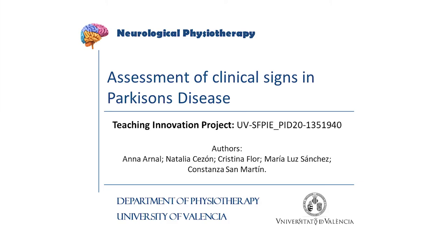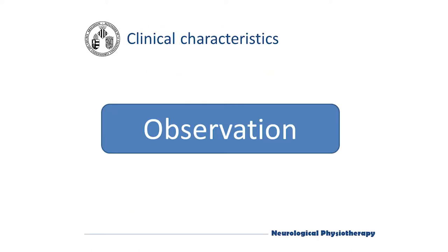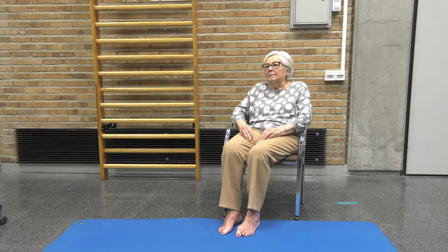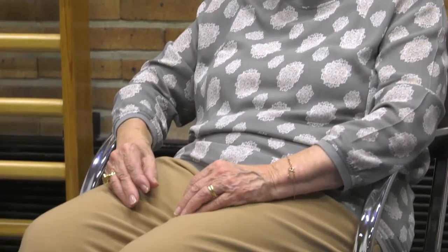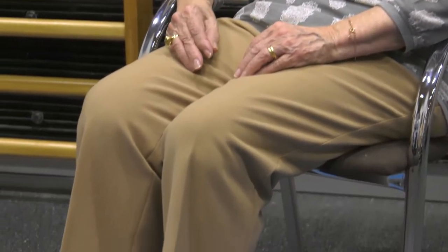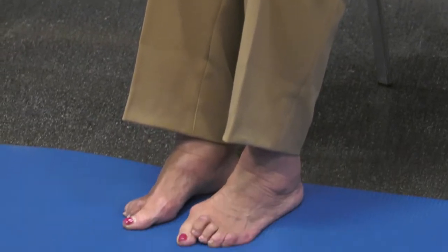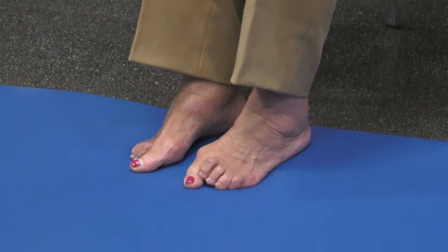In this video we will talk about the clinical assessment of the main signs of Parkinson's disease. We observe if the patient is aligned correctly when sitting on the chair or if she slides on the seat. We also observe spontaneous movements: blinking, if she oscillates her trunk from side to side, if she keeps her legs crossed or if she holds one of her hands with the other.